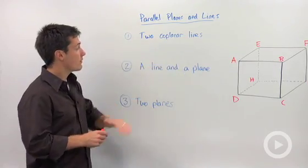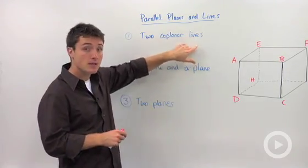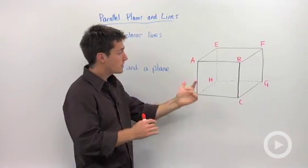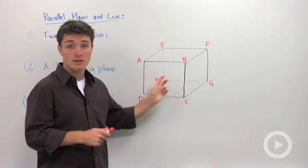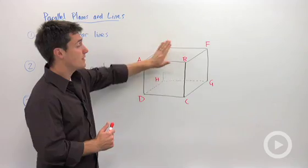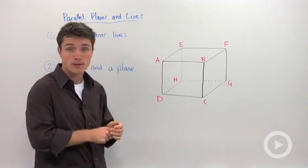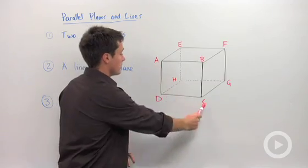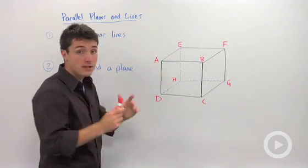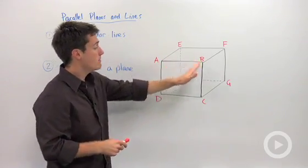So let's start off by identifying two coplanar lines in this cube right here. This cube will assume that we have six congruent faces and that opposite faces are parallel. If we start off by saying two coplanar lines, if I look at this front face, that's going to be one plane, plane ABCD.